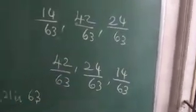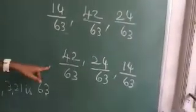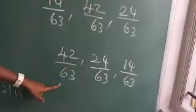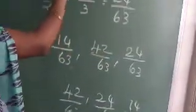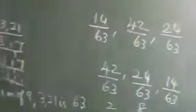Now map these back to the original fractions. What is 42/63? The corresponding original fraction is 2/3. So write 2/3 first. The next, 24/63, corresponds to 8/21. And the remaining one, 14/63, corresponds to 2/9. So the descending order of the given fractions is 2/3, 8/21, 2/9.